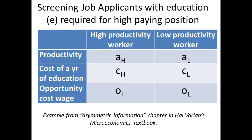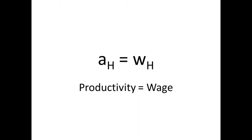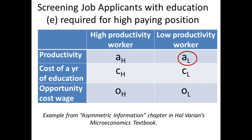This table sets up the situation. High-skilled workers have productivity AH, which can be interpreted as the amount of revenue that a firm will get as a result of that worker's labor — say $80,000. This firm is willing to pay someone what they're worth, so the productivity is equal to the wage in this setup. Similarly, low productivity workers bring the firm a certain amount of revenue — say $45,000 — and the firm is willing to pay them that.